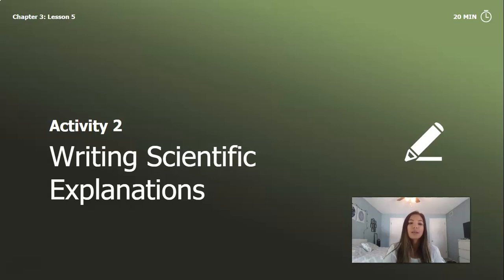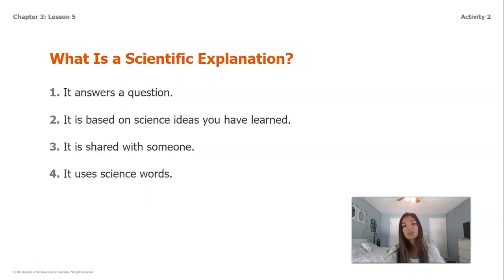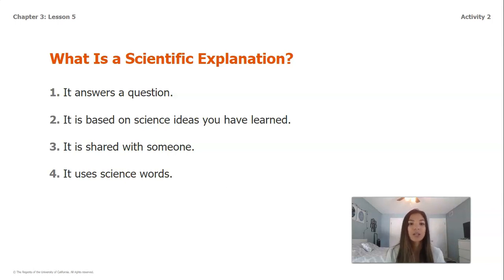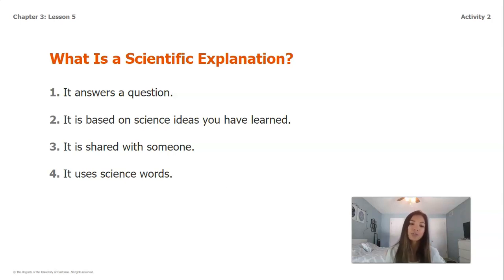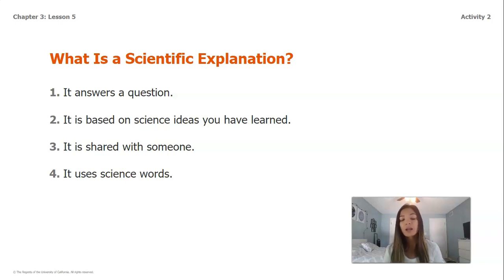Now we're going to be moving on to writing scientific explanations. So what is a scientific explanation? A scientific explanation answers a question. It is based on science ideas that you have already learned. It is shared with somebody, and it uses science words or vocabulary from the text we've read, from our slides, or from any of our models.